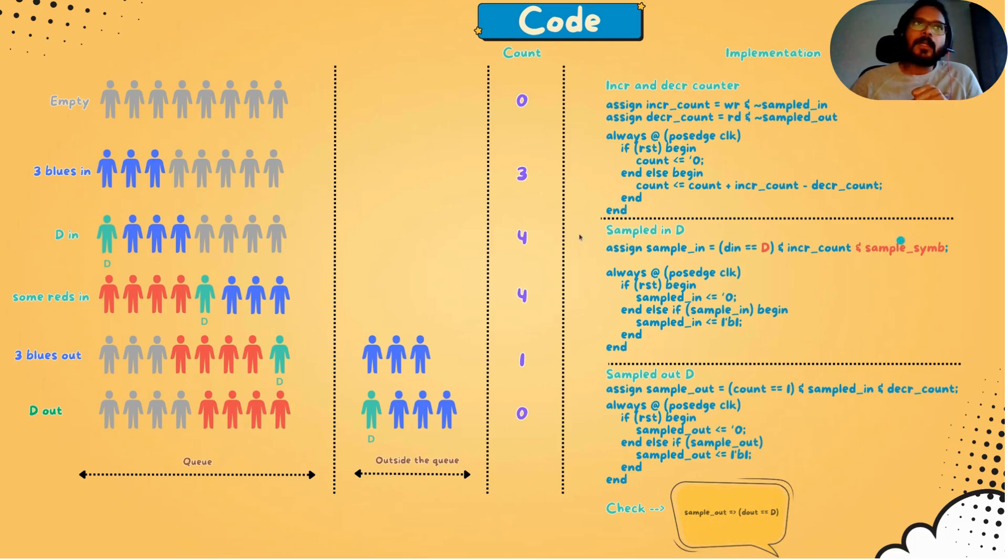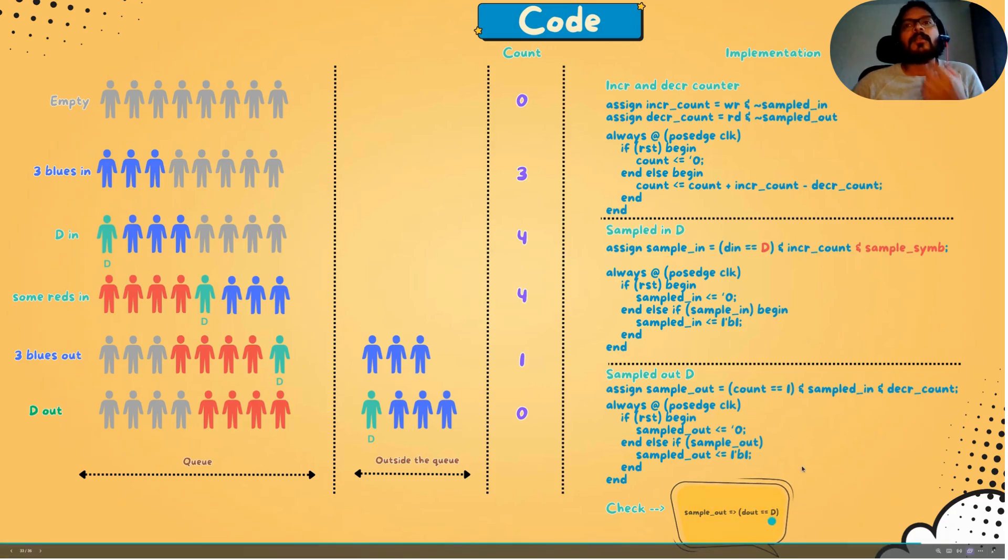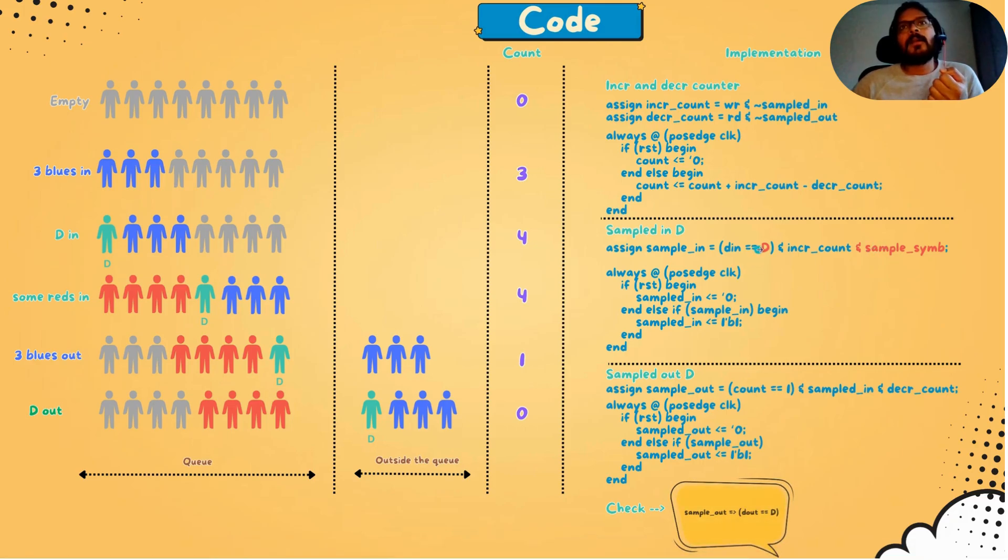So for example, since sample_symbol, this symbolic variable can take any value, if there is a bug in the second occurrence of D, then it can give us a failure trace by taking a value 0 for the symbolic variable when D comes for the first time and taking value 1 when D comes for the second time. Then this check will be checking the second occurrence of D. So that makes this check more generic in the sense that it checks for any possible input data at any possible time.